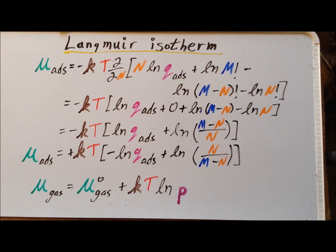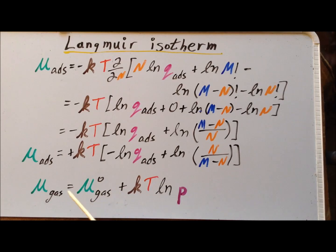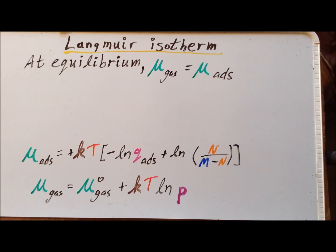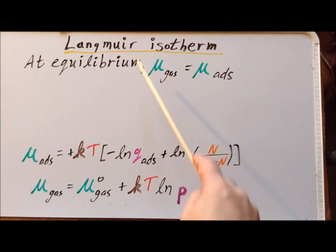Now that we have derived an expression for the chemical potential of the adsorbed gas molecules, we recall the expression for the chemical potential of free gas molecules: mu gas equals mu gas naught — the chemical potential under standard conditions — plus kT times the natural log of p. Note that if pressure p equals 1, the term after the plus sign becomes zero and the chemical potential equals the standard conditions value. We recall that at equilibrium, the chemical potentials of the various states are equal, so the chemical potential of the free gas molecules equals the chemical potential of the adsorbed gas molecules.